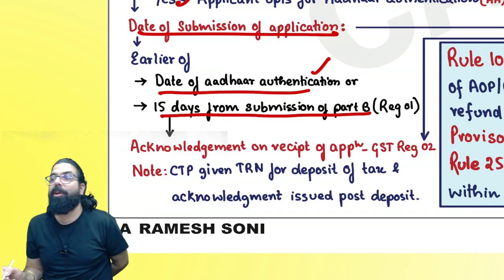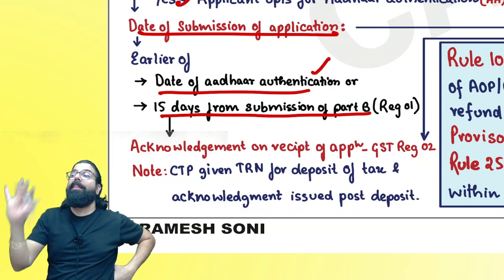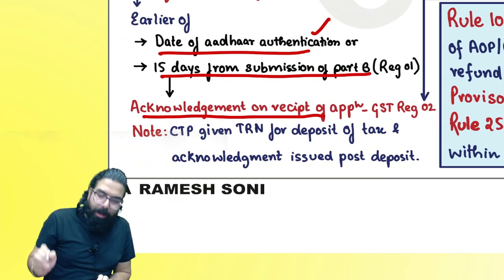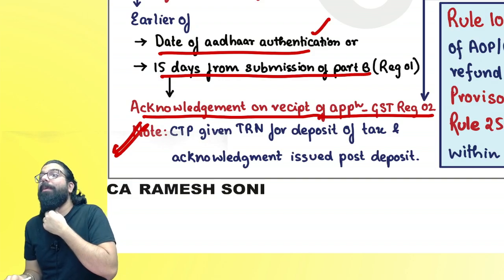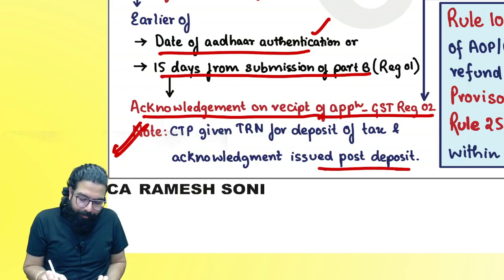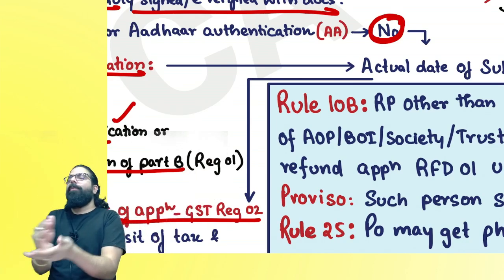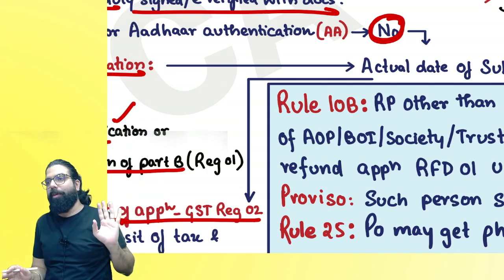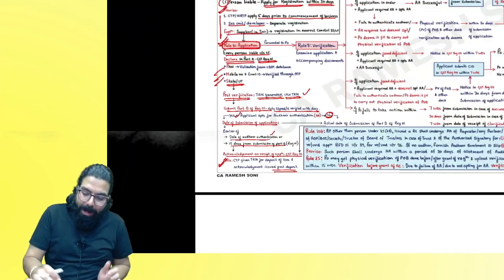If you opt NO for Aadhaar authentication, the day you submit Part B is your date of submission and the officer starts verification from that day. Once the form is submitted, the officer examines the application and accompanying documents. If the application is fine and the person is notified under section 25(6D) — not required Aadhaar authentication — then within seven days registration is approved and registration certificate is issued.